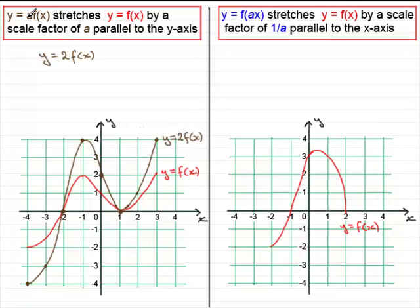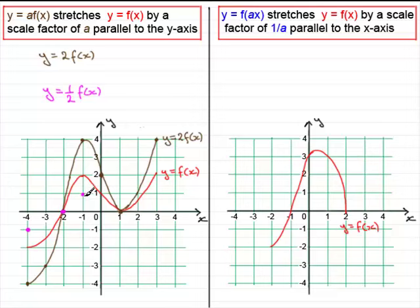Now, if a was a fraction less than 1 but greater than 0 — say a half — let's draw the graph of y equals a half f of x. It's a stretch, scale factor a half, parallel to the y-axis. Looking at key points: this point 2 units below the x-axis gets halved to 1 unit below. This point that's 2 units up is halved to 1 unit. The point on the y-axis is halved. Points on the x-axis remain invariant. The point at the end is 2 units up, so that's halved.